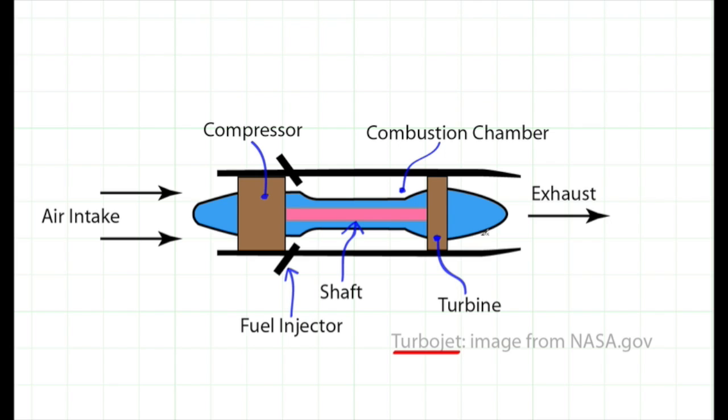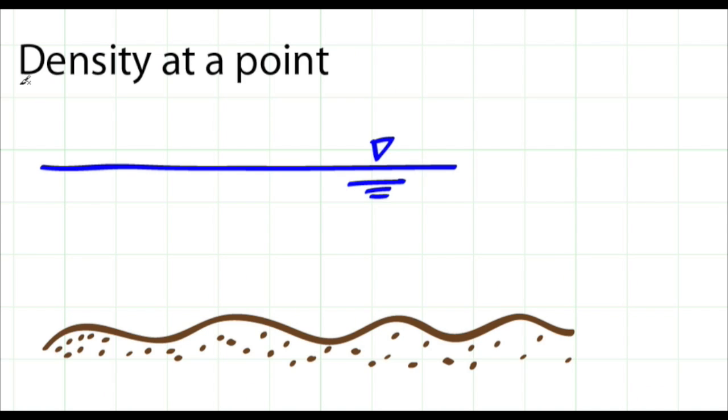Therefore engineers came up with the idea of defining density at a point. To define density at a point, I'll use an example of flow in a river. This symbol represents the water-air interface.